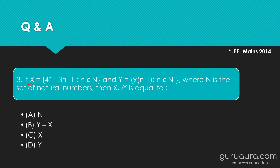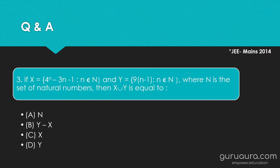If X = {4^n − 3n − 1 : n ∈ ℕ} and Y = {9(n−1) : n ∈ ℕ}, where ℕ is the set of natural numbers, then find X union Y. You are given the two sets X and Y and need to find X∪Y. Pause the video and try to solve it, then play the video again to see how you answered.